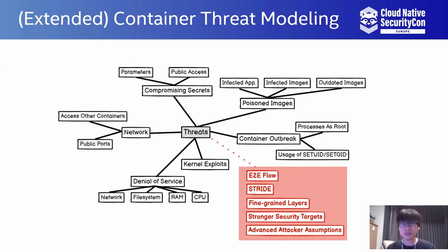In fact, the threat model of containers can be further extended in several ways. To complete the OWASP threat model, first, the end-to-end flow of containers should be considered, including the CI and CD phases, as well as code and image management, where supply chain attacks can happen. Secondly, a STRIDE analysis can be applied to more fine-grained layers of containers, to understand when and how spoofing, tampering, repudiation, and information disclosure can occur in which layer.